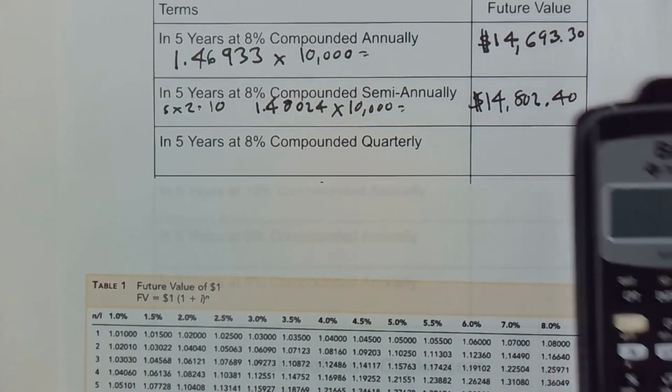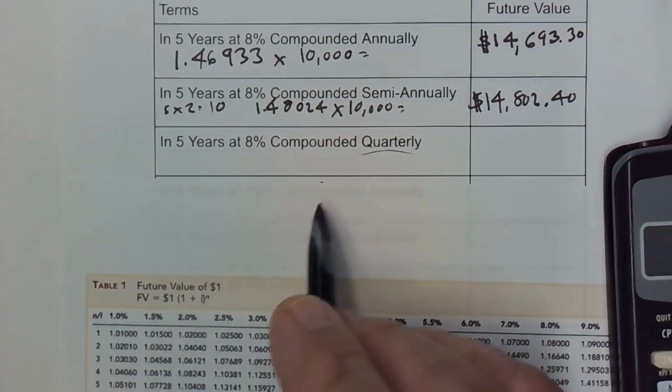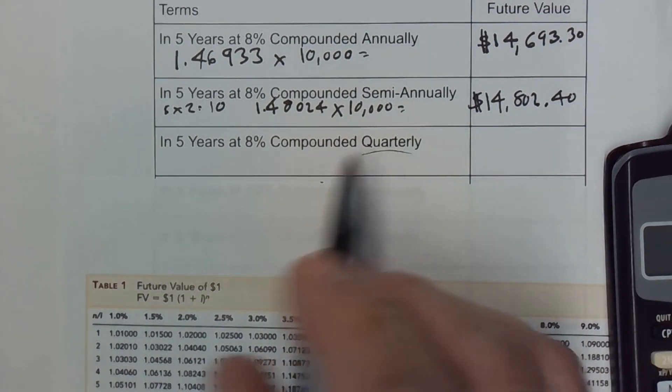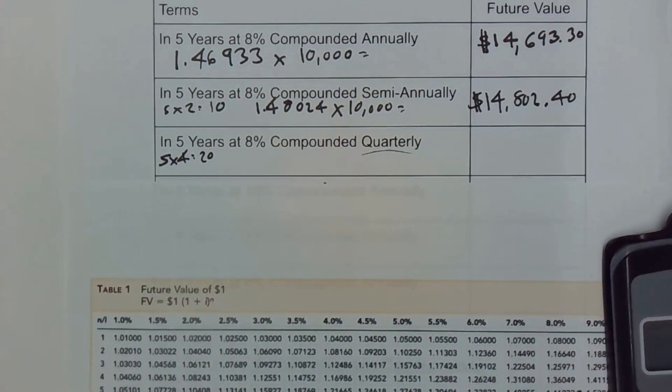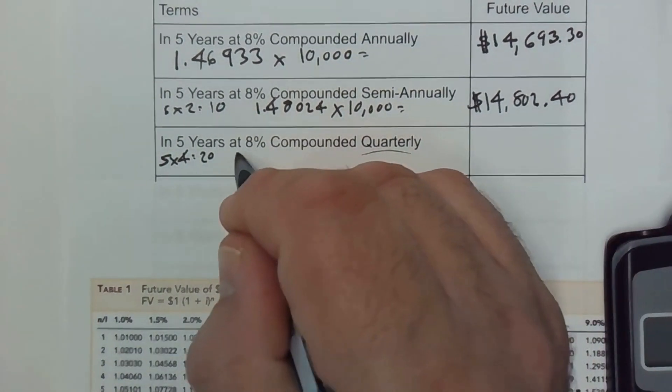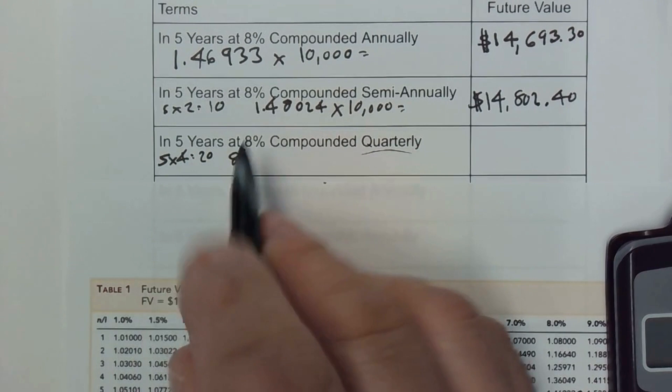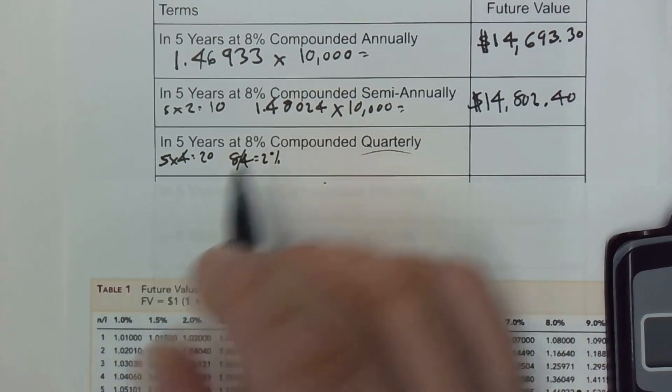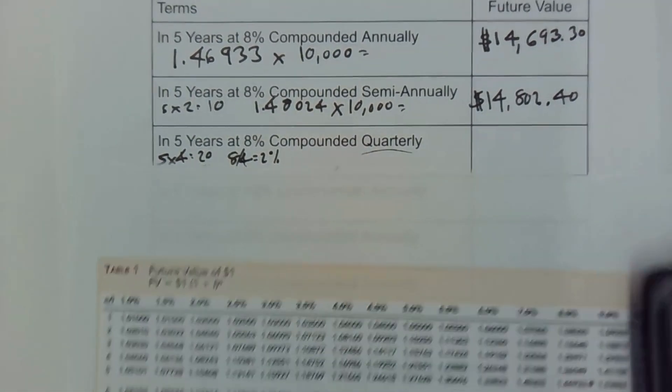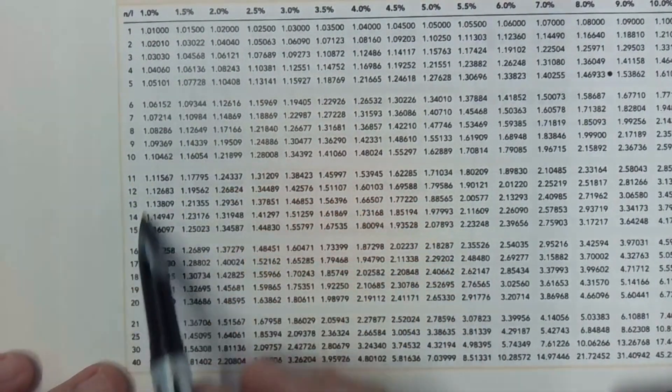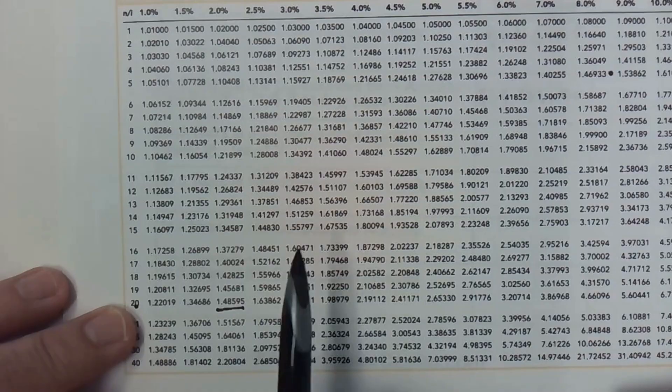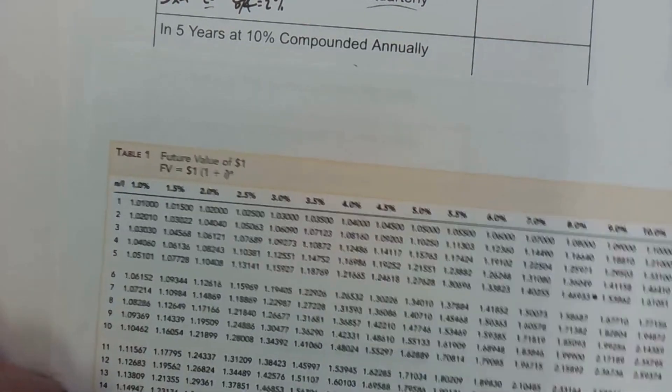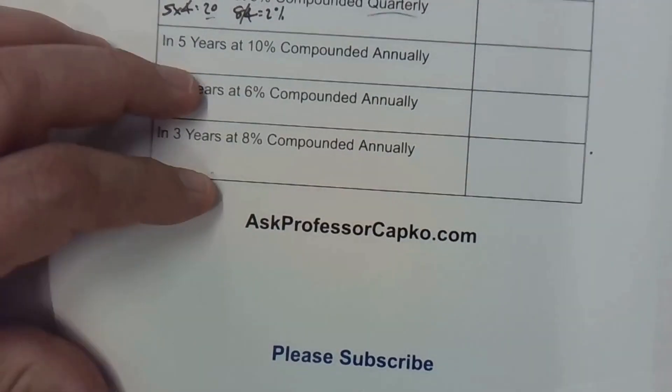Let's look at the next one. Five years at 8% compounded quarterly. So now we're compounding it four times a year for five years. Five years times four times a year, that's 20 periods. We're still at the 8%, but we have to divide it by four because it's four times per year, so that's going to be 2%. So we need 20 as our number of periods and 2% as our interest rate. I'm going to find 20 here for the number of periods, and go across to 2%, which is right here.